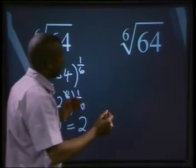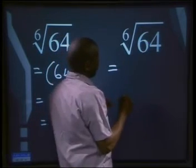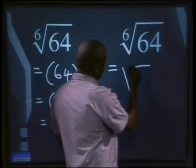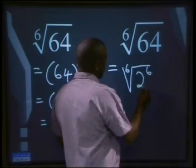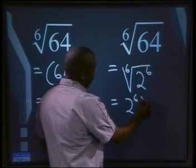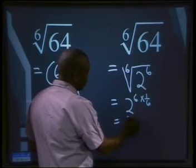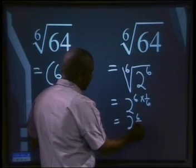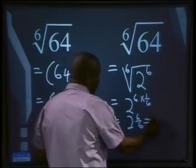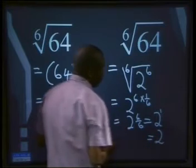The second method will be simplifying the 64 first inside the root sign. So we'll have the 6th root of 2 to the power of 6. That will give us 2 to the power of 6 multiplied by 1 over 6, which is 2 to the power of 6 over 6. We know 6 over 6 equals 1, so our answer is 2 to the power of 1, which is the same as 2.